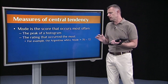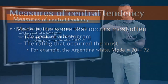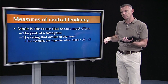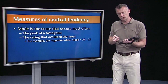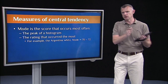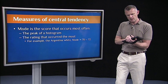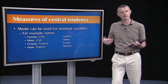Finally, the mode is just the peak of a histogram — the score that occurs most often. The Argentinian white wine distribution was an easy one: it was leptokurtic, with a really strong peak right around 70 to 72. It was also about the average because it didn't have really extreme rankings on either end. The thing about the mode is it can also be applied to nominal variables, which is not true of the mean or the median.